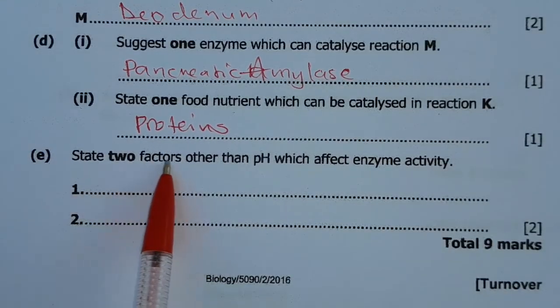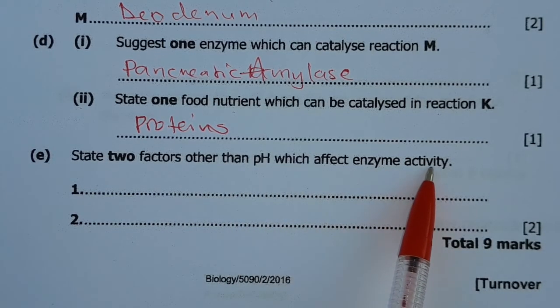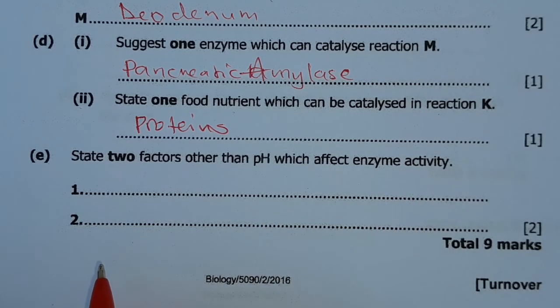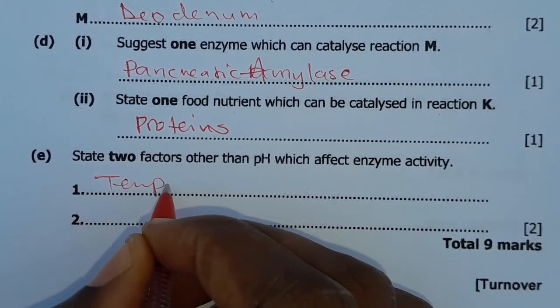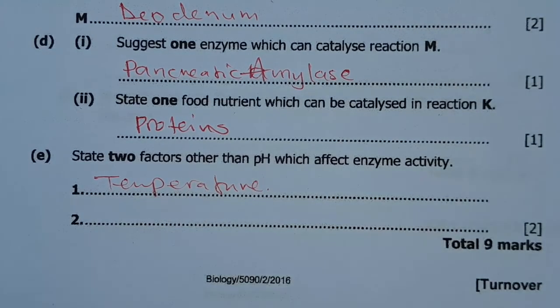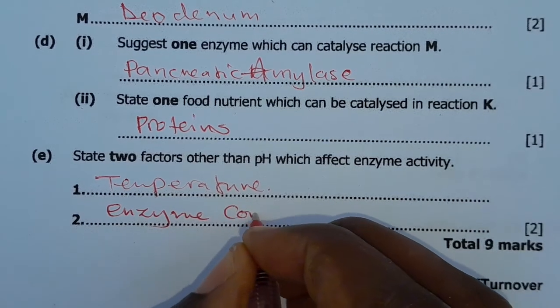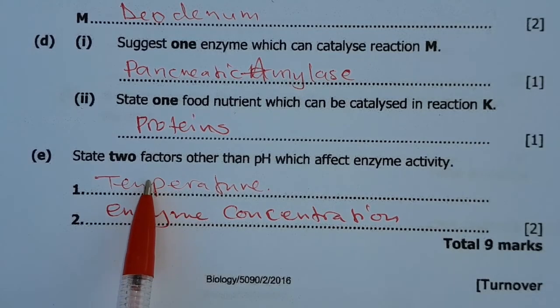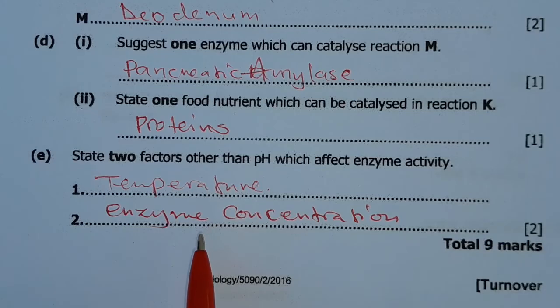The next question says, state two factors other than pH which affect enzyme activity. So apart from the pH, another factor that affect the enzyme activity is the temperature. So temperature is one of them. Apart from the temperature, we also have enzyme concentration. We're only going to write these two, but I'll just mention another one. Another one is substrate concentration.